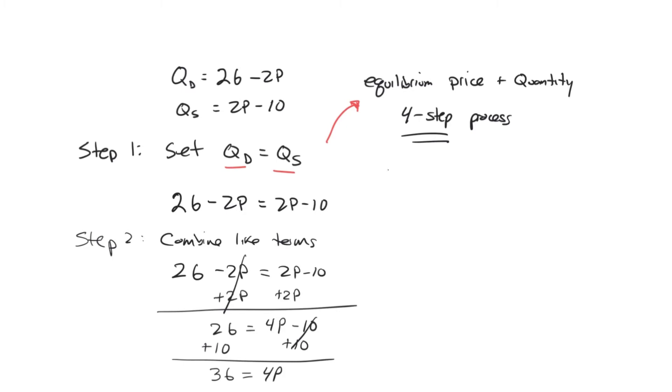Now that we've combined our like terms, our third step is going to be to get P by itself. So we're going to get P by itself. And right now we have 36 equals 4P. And the way we're going to do this is if we have 4P over here on the right, we need to get rid of that 4, and the way we do that is we divide by 4 on both sides. So these 4s will cancel and become a 1, so we're just left with P. And that P is equal to 36 divided by 4, which is 9. So we know that the equilibrium price in this example is equal to 9.